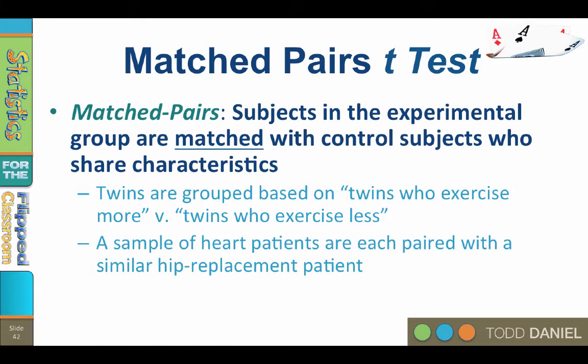Another way to use matched pairs is to deliberately match subjects with control subjects who share the same characteristics. For example, if we are studying patients with a heart condition who are in the hospital, we cannot simply use healthy individuals who have not been hospitalized for our control group. We need to find people who are very similar except for not having the heart condition. So we deliberately match each heart patient with a similar hip replacement patient who is the same age, gender, weight, smoking history, and other characteristics to find someone as similar as possible to our heart patients but who does not have the heart condition.